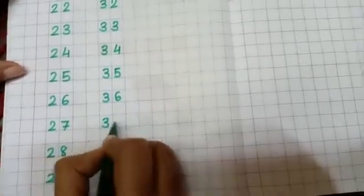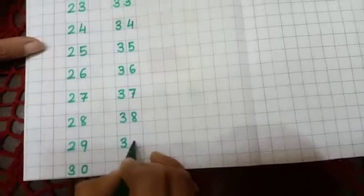3, 5, 35, 3, 6, 36, 3, 7, 37, 3, 8, 38, 3, 9, 39, 4, 0, 40.